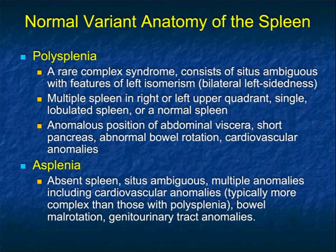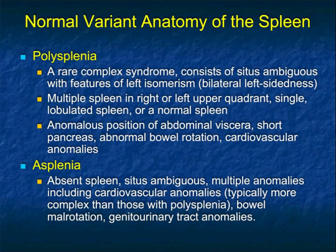Polysplenia is a complex syndrome consisting of situs ambiguus with features of left isomerism — bilateral left-sidedness. It involves multiple spleens in the right or left upper quadrant, which can be single, lobulated, or a normal spleen, but typically multiple. There is often anomalous position of abdominal viscera, a short pancreas, abnormal bowel rotation, and cardiovascular anomalies — the last of which is particularly important.